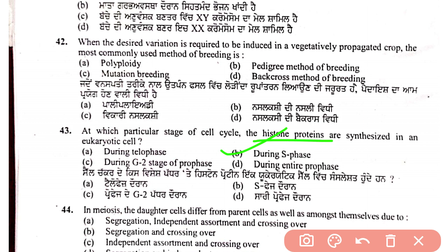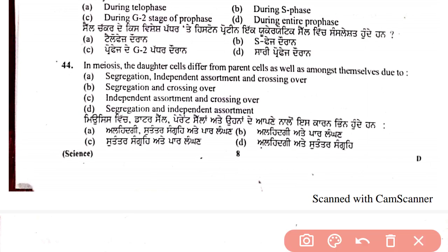Next question: in meiosis, daughter cells differ from parent cells as well as among themselves due to which process? In meiosis, crossing over causes variation between daughter and parent cells. The answer is segregation, independent assortment, and crossing over — crossing over is the key reason for variation.